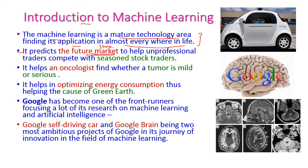It is also helpful for oncologists for finding whether the tumor is mild or serious, to find whether the tumor is a normal tumor or a cancer tumor. We can easily analyze whether the tumor is mild one or serious one. For that purpose also, nowadays the machine learning algorithms are very much helpful. It helps optimizing energy consumption, thus helping the causes of green earth. We can determine how much energy the people are using, and accordingly we can save our earth.